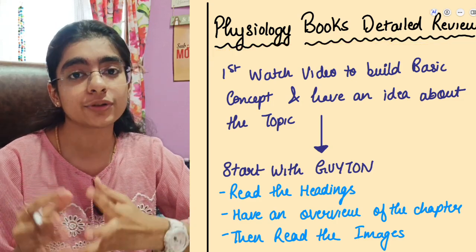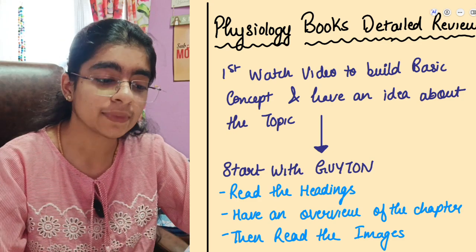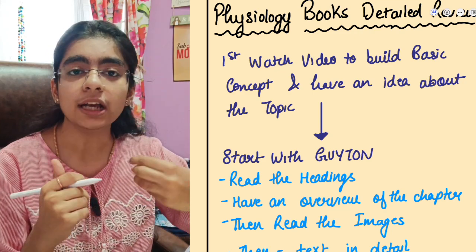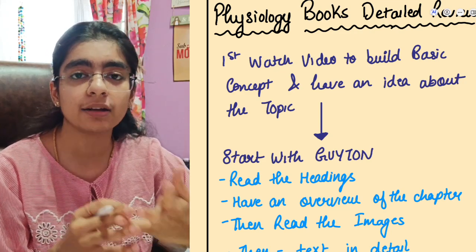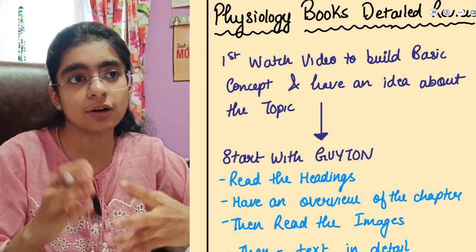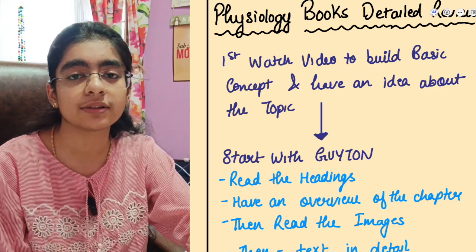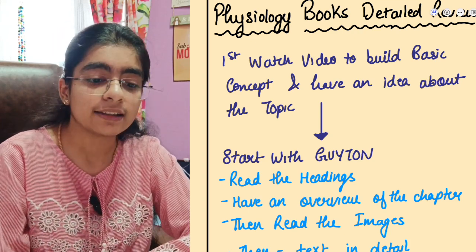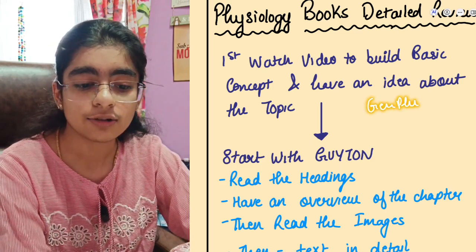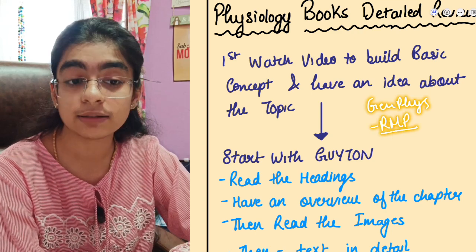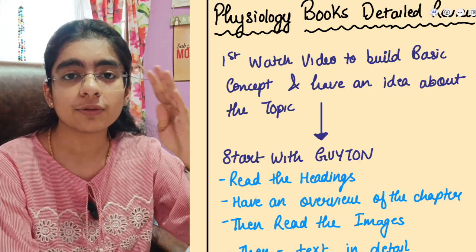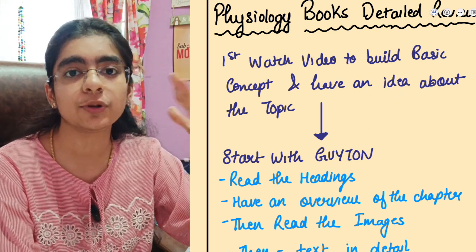First, you have to watch videos to build a basic concept. You can use any platform like Vigorkul, MedEd, or whichever platform you have bought. You can also watch YouTube videos like from Ninja Nerd. This gives you a basic idea — for example, if you are studying Resting Membrane Potential from General Physiology, you should know what it is before reading the book, so you get better orientation and build a better concept.